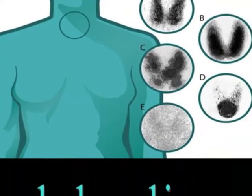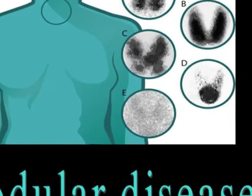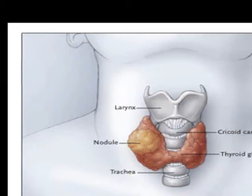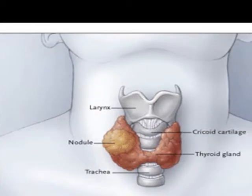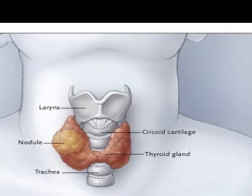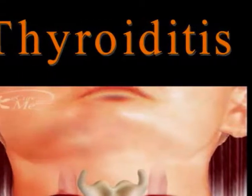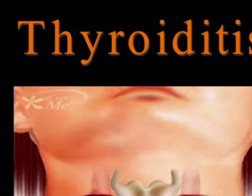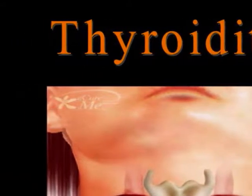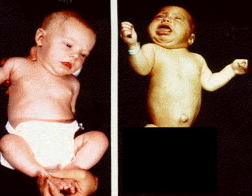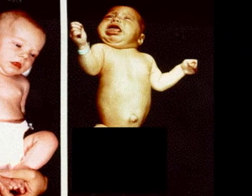Second, nodular disease. Toxic multinodular goiter is also a common form of thyrotoxicosis, often affecting older women. Third, thyroiditis. If the thyroid is inflamed by viral or a rapid autoimmune attack, the resulting follicular cell death will lead to the release of preformed thyroid hormones.